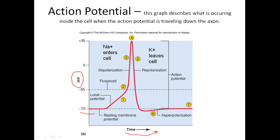Excitatory neurotransmitters build up, and at the axon hillock they are summed. If we hit negative 55, that's the signal for the sodium and potassium voltage-gated channels on the axon to open. Sodium enters the cell — that's depolarization — and we hit a maximum of positive 35 millivolts.